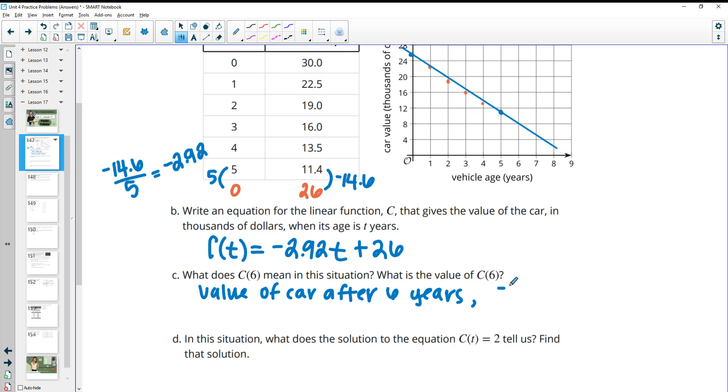We can also plug it in here. So I'm going to plug it into my equation. So negative 2.92 times 6 plus 26. So negative 2.92 times 6 is negative 17.52. Then we'll add 26. And we get 8.48. Which means 8,480 is the value.